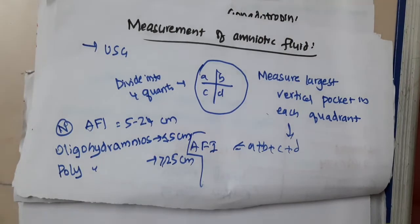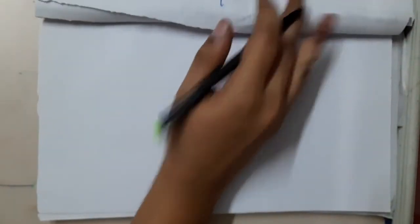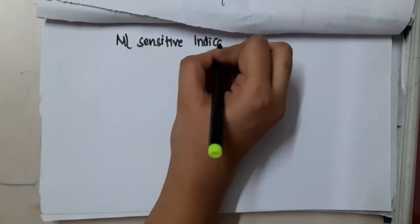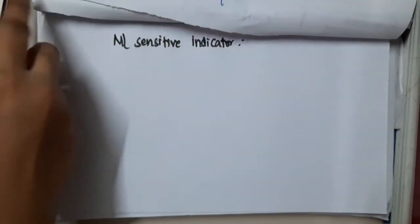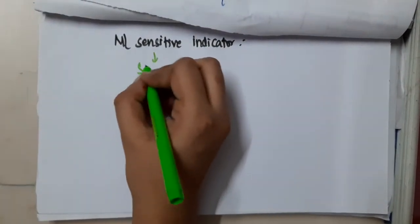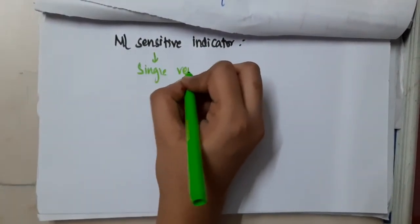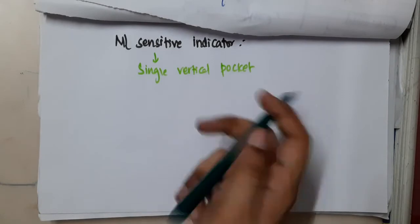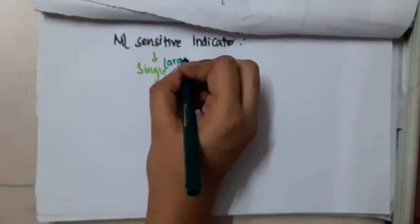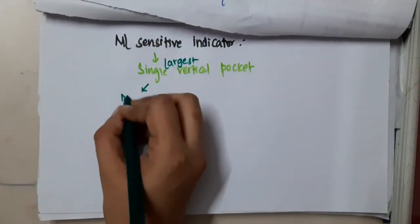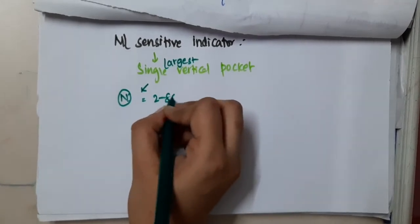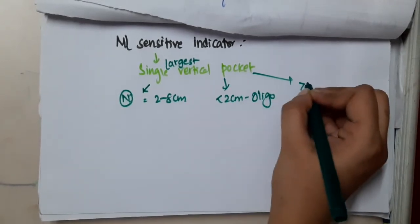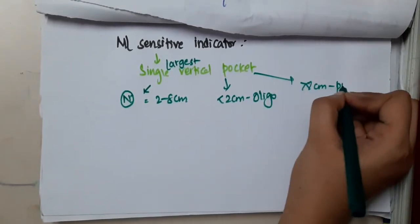The most sensitive indicator for measurement of amniotic fluid is the single largest vertical pocket. Normal is 2 to 8 cm; less than 2 cm is oligohydramnios, and more than 8 cm is polyhydramnios.